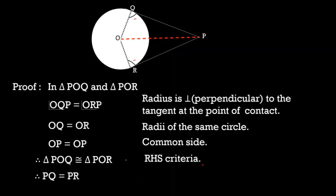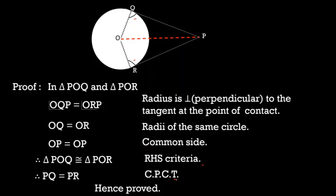Therefore, PQ is equal to PR by CPCT — that is, corresponding parts of congruent triangles. Hence, both tangents from an external point are equal. For this final step, you will get half a mark.